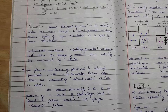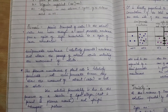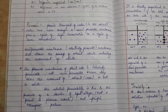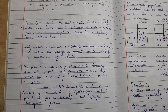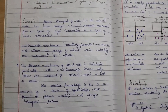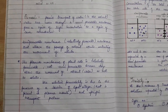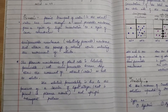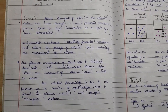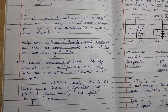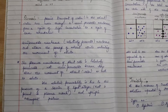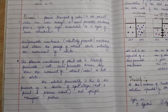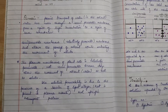A semi-permeable membrane allows the passage of solvent while restricting the movement of solutes. The solvent can pass through but solutes cannot. Importantly, the plasma membrane of a plant cell is described as selectively permeable rather than simply semi-permeable, because it allows movement of both water as well as certain solutes.